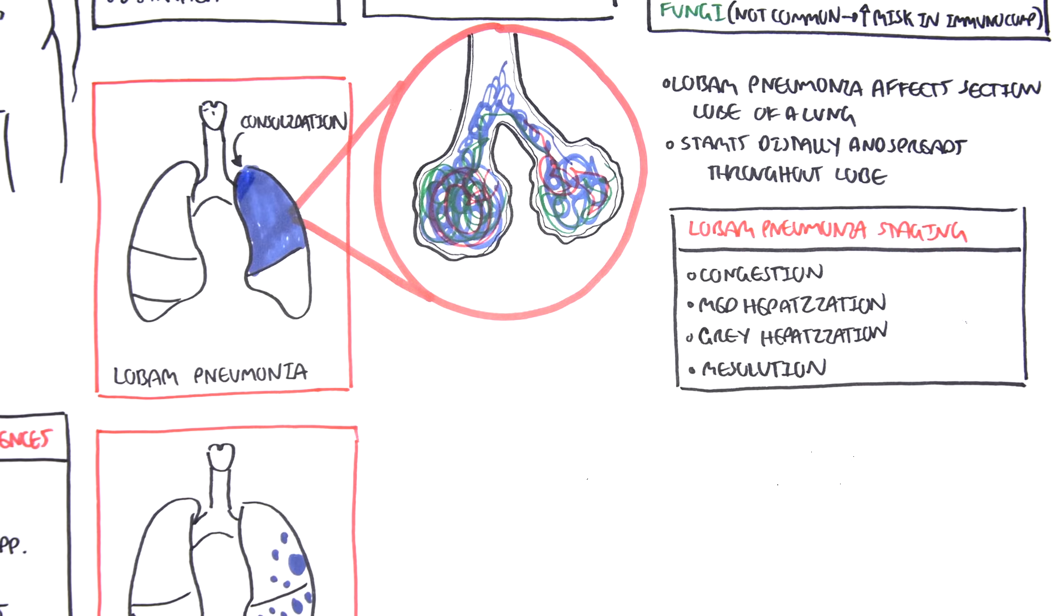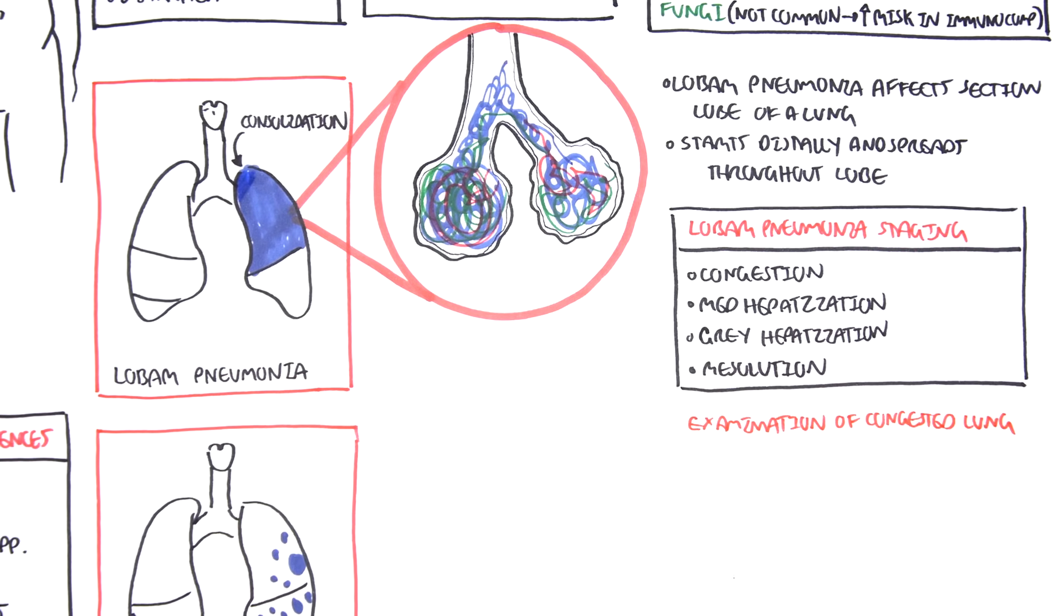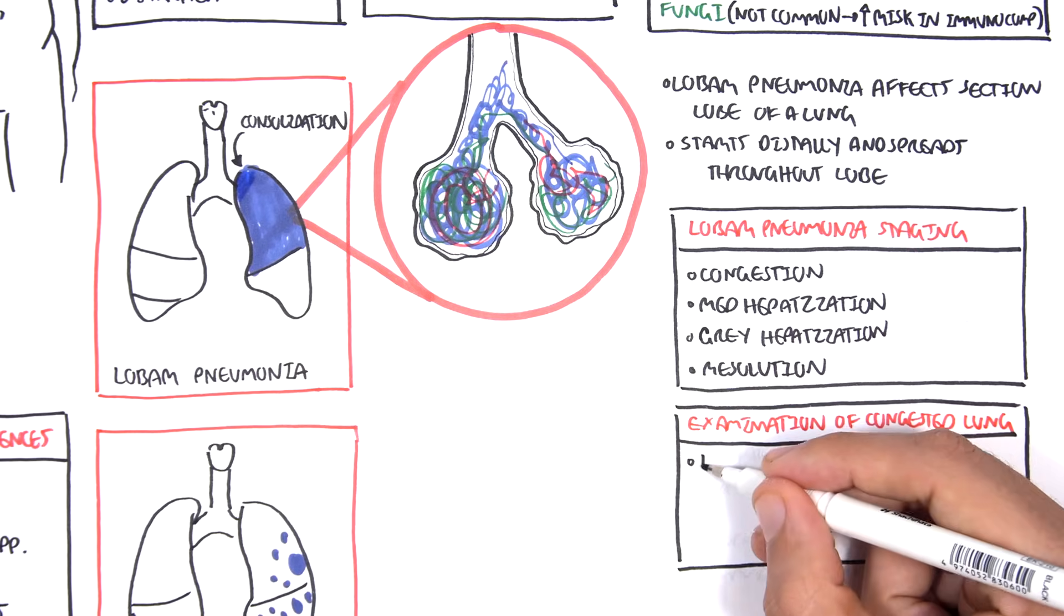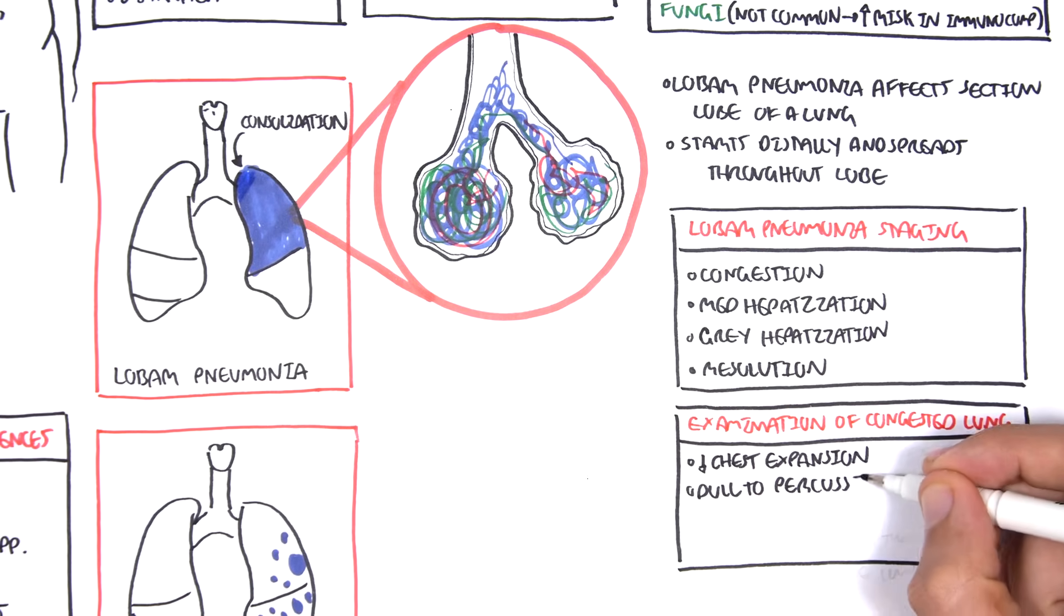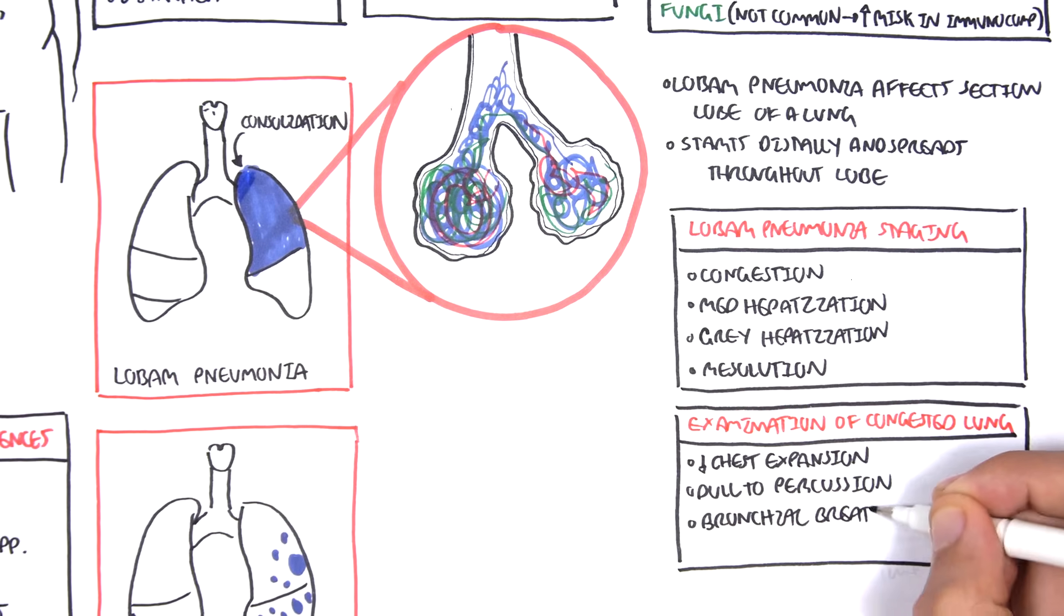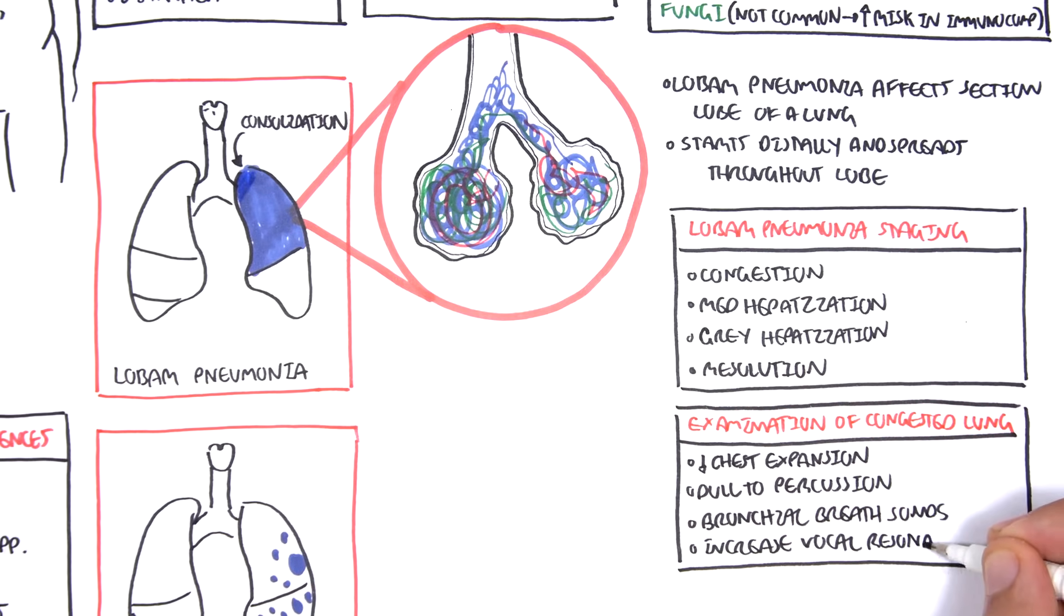So these are essentially staging of lobar pneumonia based on a pathological view. So if we were to do a physical examination on a patient who has consolidated lobe, so congested lung, we would most likely find the following things: a decrease in chest expansion on the affected side. That side of the lung consolidation is dull to percussion. And we can also hear bronchial breath sounds and also include vocal resonance.